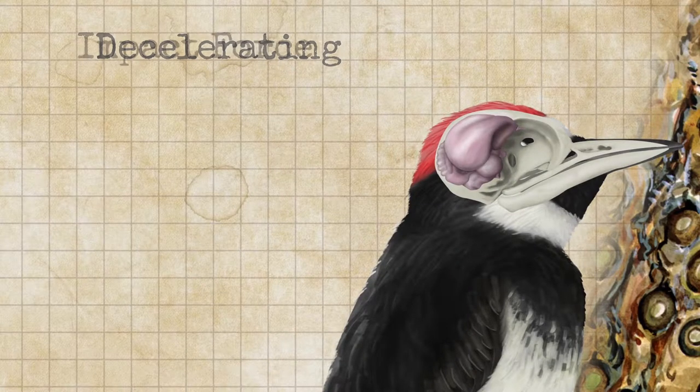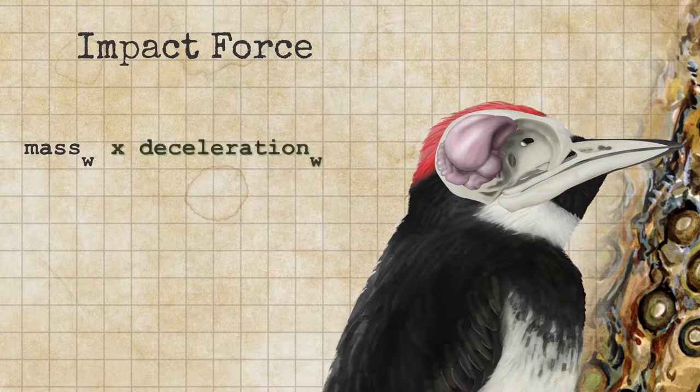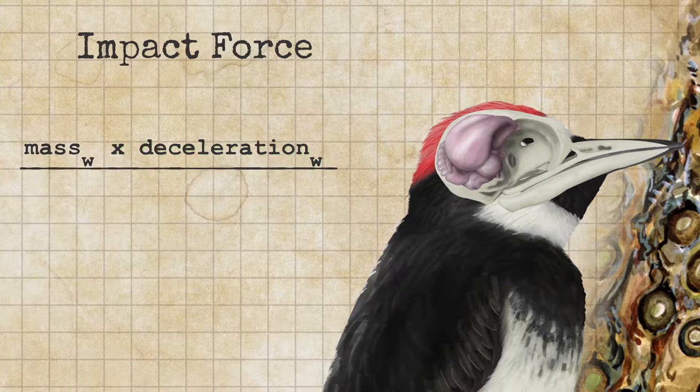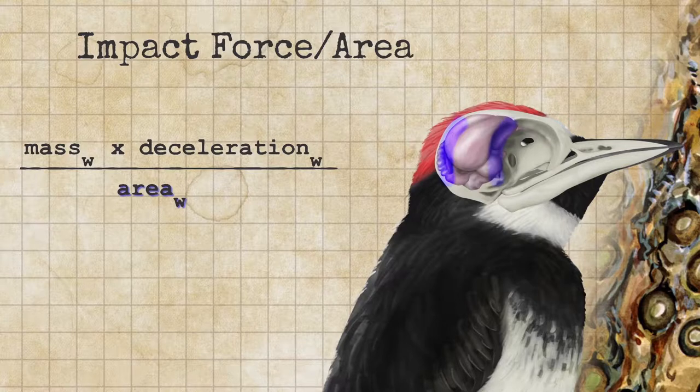And we can say that the impact force for the woodpecker is the mass of the woodpecker brain times the deceleration that it undergoes when it hits the tree, and we're going to divide that by the area of contact between the brain and the skull.